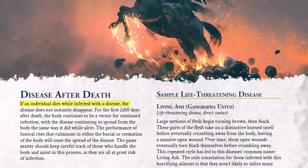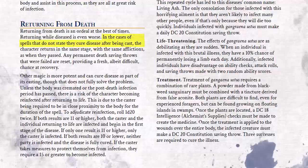In the case of a disease, someone who dies while infected should have a more difficult time coming back from death and likely still be afflicted with the disease if they do return. In our new disease system, if an individual dies while infected, the disease does not instantly disappear. For the first 2d10 days after death, the body continues to be a vector for infection, spreading the disease the same way it did while alive. If magic raises the person from the dead, for spells that do not state they cure disease, the character returns at the same stage with the same affliction as when they died — though any failed permanent death saving throws are reset, providing a fresh, albeit difficult, chance at recovery.